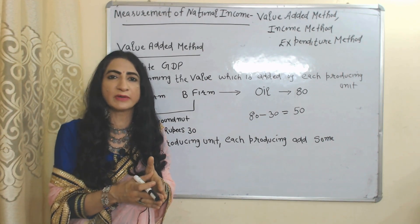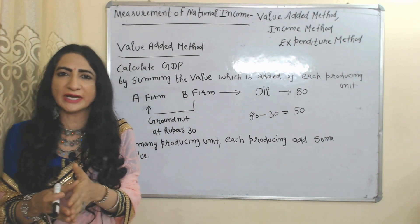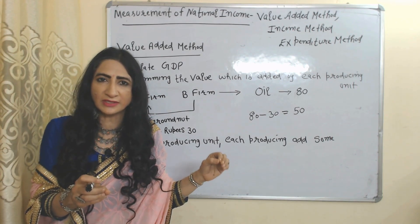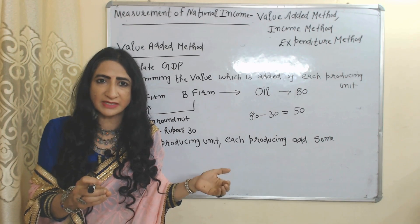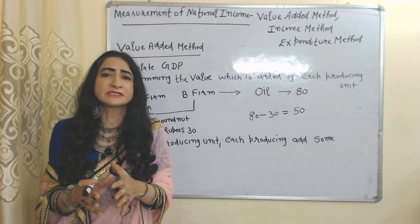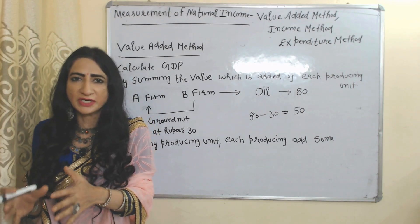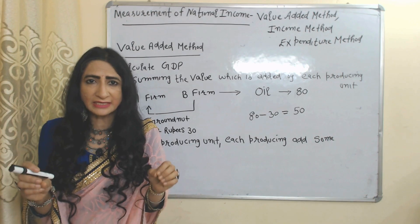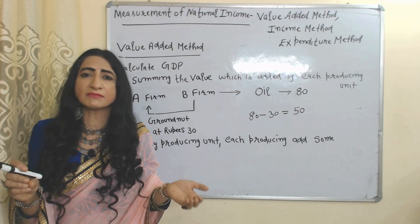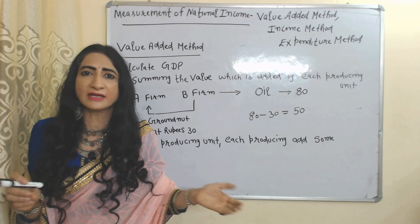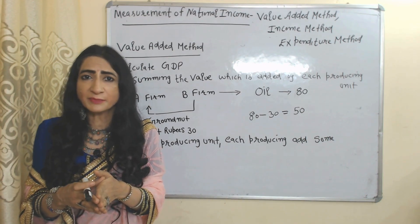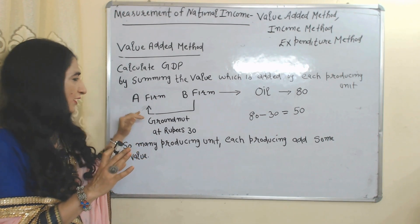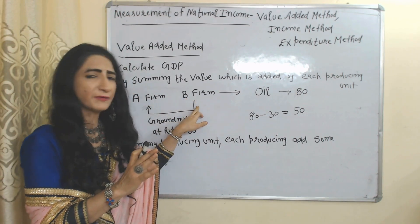First of all, we will see the value-added method. According to the value-added method, we can calculate national income by summing the value which is added by each producing unit. For example, there are two firms, A and B.